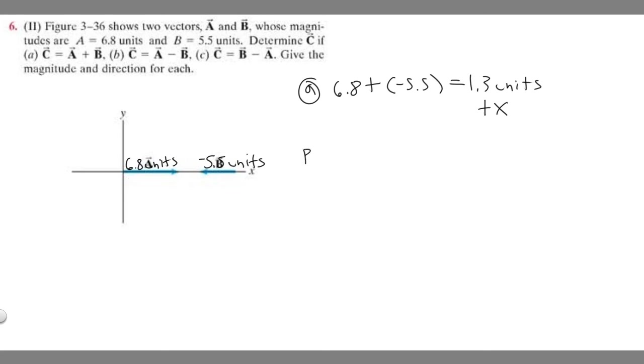Let's go ahead and do B. So B is going to be A minus B. So A is 6.8, 6.8 minus, and then B is minus 5.5. So we're minusing a minus, which makes it a plus. So 6.8 plus 5.5 is going to give you 12.3. So 12.3 units. And once again, we're positive, so we're going to be traveling in the positive x direction, plus x.